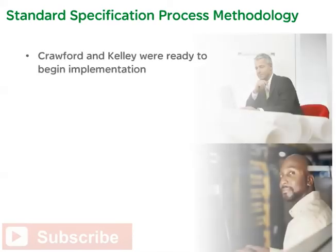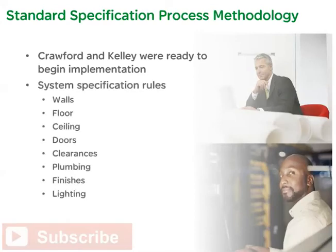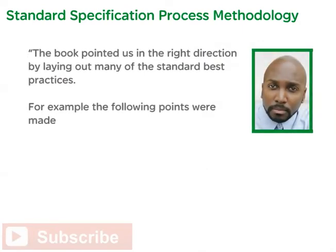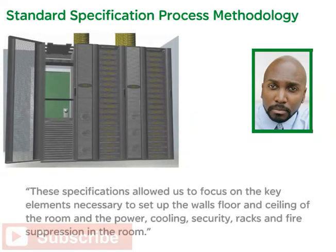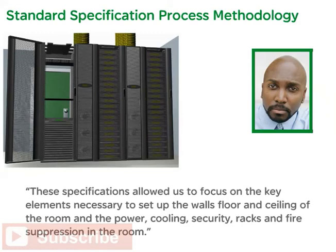With a well-written specification in hand, Crawford and Kelly were ready to begin implementation. Rules for walls, floor, ceiling, and doors, as well as clearances, plumbing, finishes, and lighting were all part of their system specification and project manual. The book laid out many standard best practices. For example: wall and flooring finishes shall reduce static electricity; floor shall not be carpeted; no exterior doors or exterior windows shall be present unless required by safety code; ceiling tiles shall be flush and level and shall not require the removal or displacement of mechanical or electrical infrastructure. These specifications helped the team focus on the key elements for setting up the walls, floor, ceiling, power, cooling, security, racks, and fire suppression.